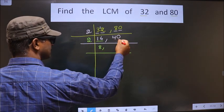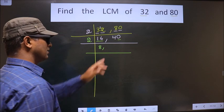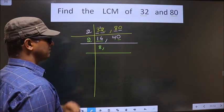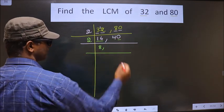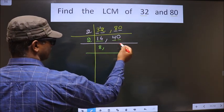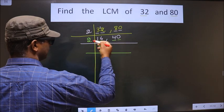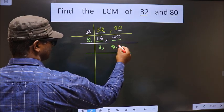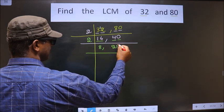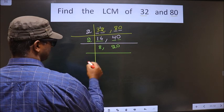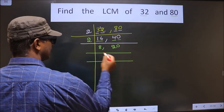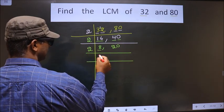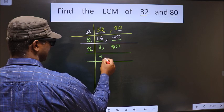For this number the last digit is 0, so this number is also divisible by 2. The first digit is 4. When do we get 4 in the 2 table? 2 twos 4. The 0 carries down as it is. Now here we have 8. 8 is nothing but 2 fours 8.